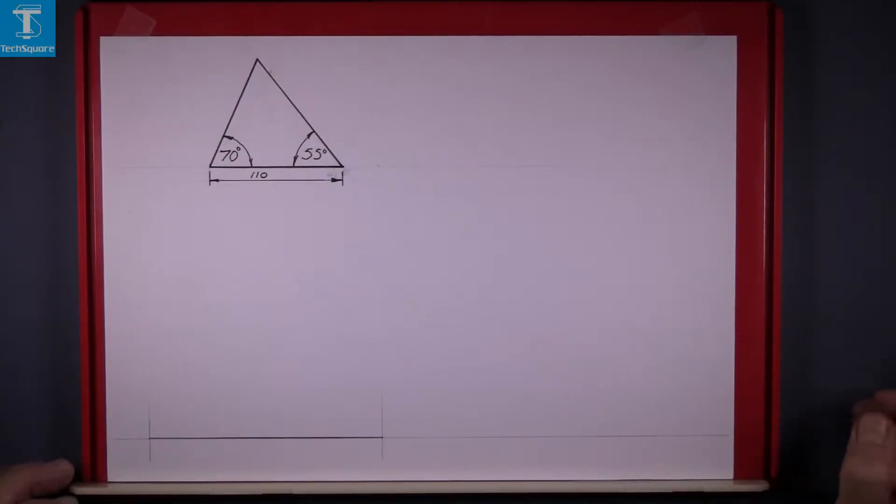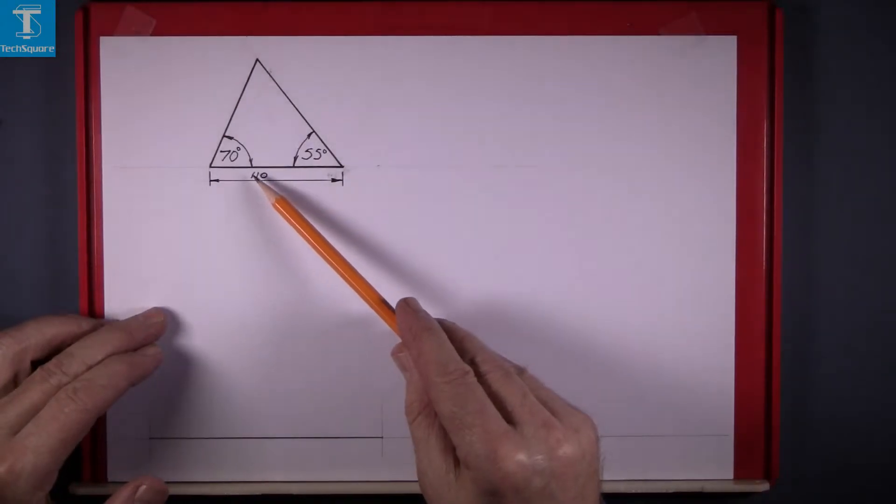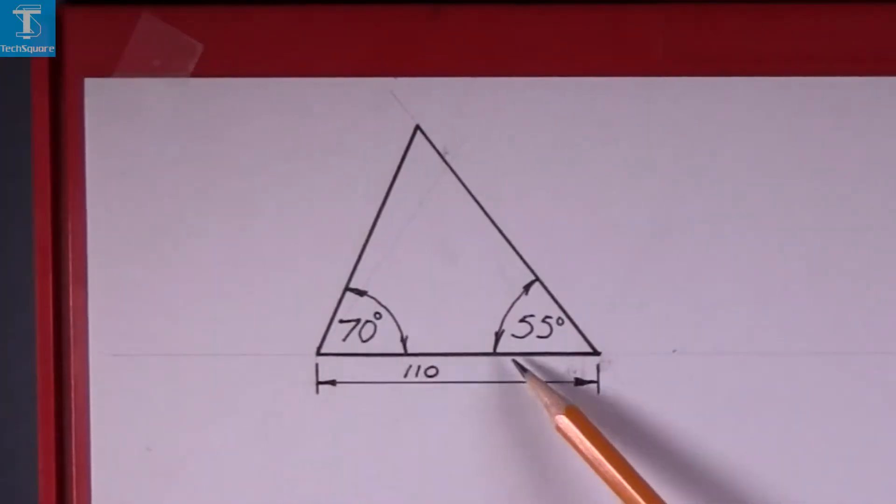And now for your protractor practice exercise. This drawing is your next exercise. We're going to draw this triangle here and it has a base of 110 and this angle here is 70 degrees and this angle here is 55 degrees.